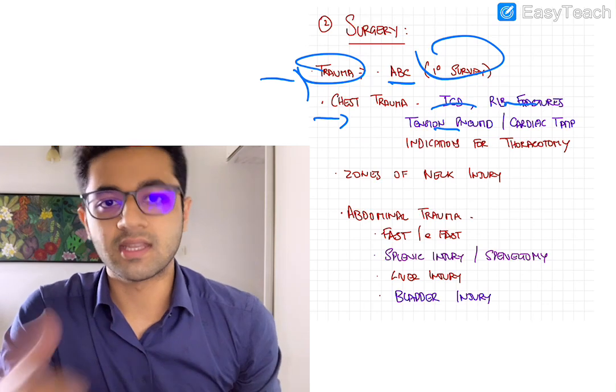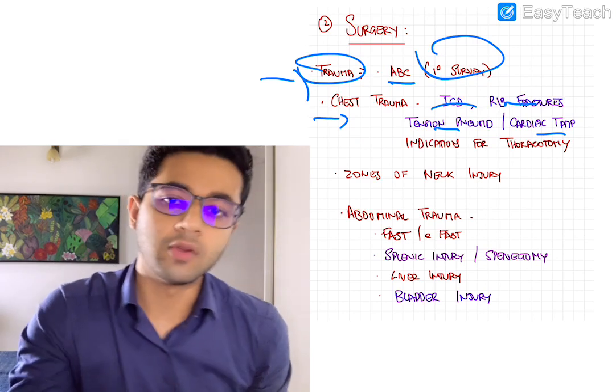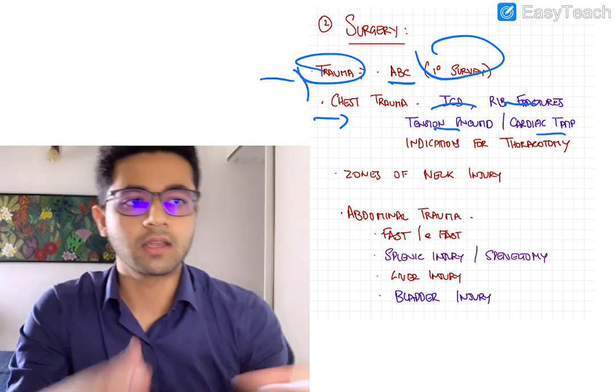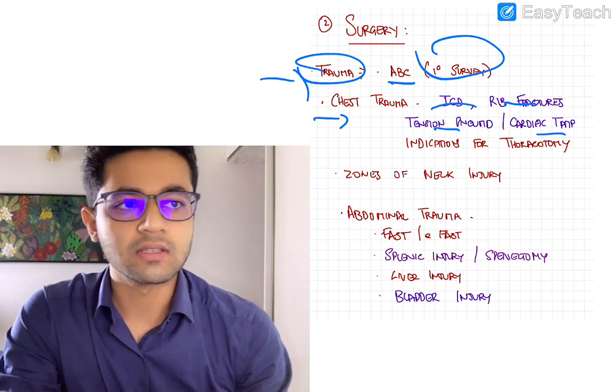particularly flail chest is really important. Tension pneumothorax and pneumothorax. More importantly, tension pneumothorax, very commonly asked. Cardiac tamponade and how to differentiate tension pneumothorax and cardiac tamponade, your Beck's triad, basically. Little bit about needle pericardiocentesis also.